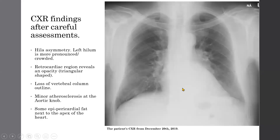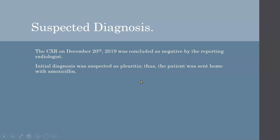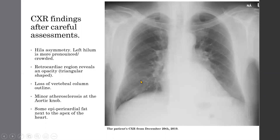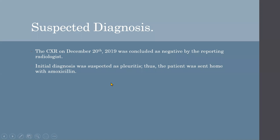Besides those two findings, other things to note include the presence of arteriosclerosis in the aortic knob, epicardial fat next to the apex of the heart, and the left hilum which seems more pronounced. The reporting radiologist missed all these findings and concluded the chest x-ray was negative.